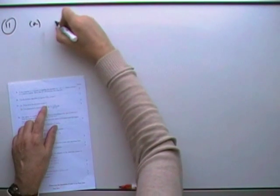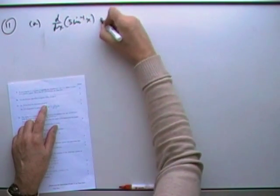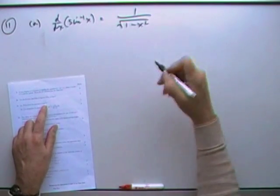Number 11. Write down the derivative. So d by dx of inverse sine of x is just 1 over the square root of 1 minus x squared.